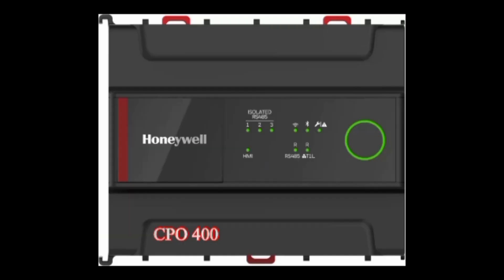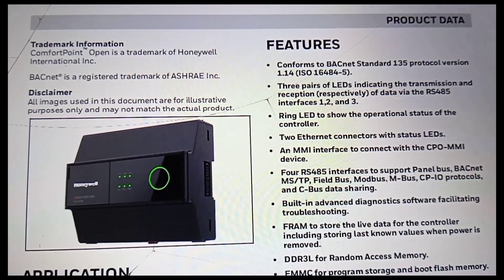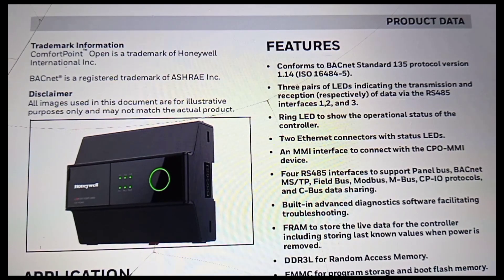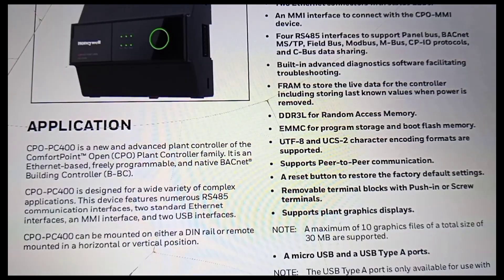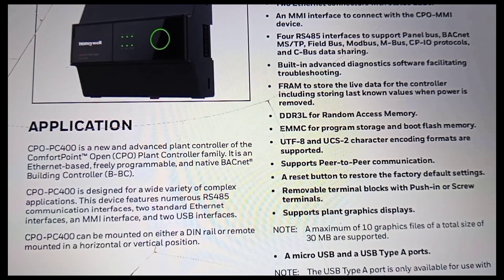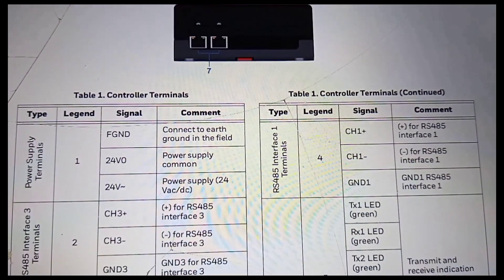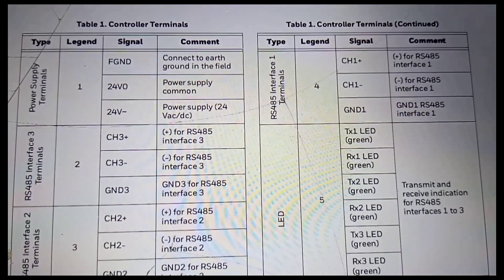The ComfortPoint Open CPO plant controller family is powered with a dual-core 32-bit processor in the CPO PC200, 400, and 410 models, and a higher performance quad-core processor in the CPO PC500 model. These plant controllers are Ethernet-based, freely programmable, and native BACnet building controllers.